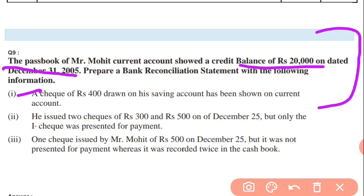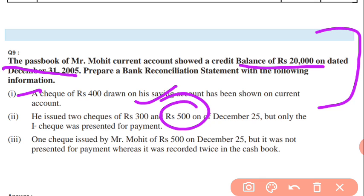He had issued two checks — 300 and 500 — on 25th December, but only one check was presented for payment. The 300 check is accounted for, but the 500 check was not yet presented for payment. It was recorded in the cashbook twice — do baar link diya gaya — to minus hona tha, isliye yeh minus liya.